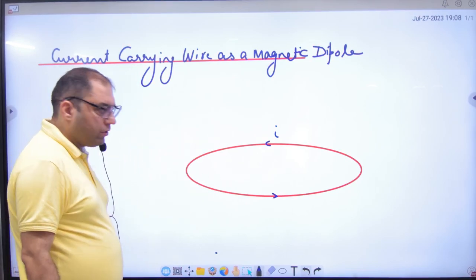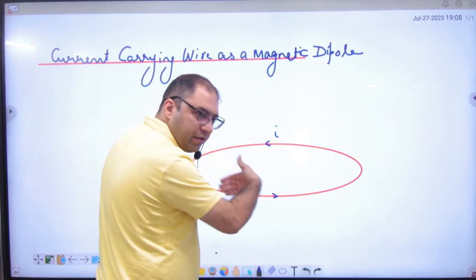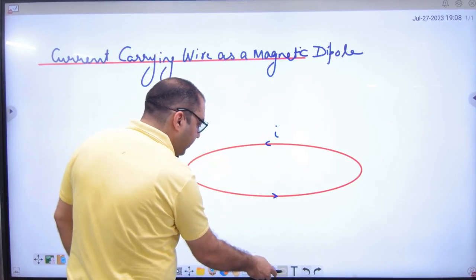What is the direction of B? You have told that it is four-finger current. Where will B come? Vertically, upwards.